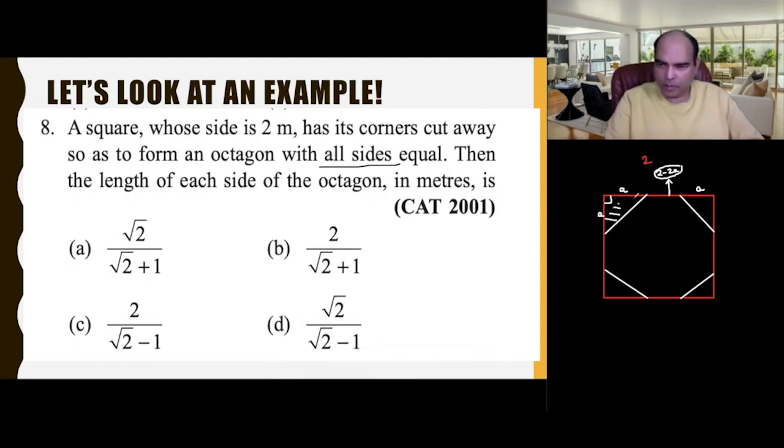You can see that this value is essentially a√2. What's going to happen is 2 minus 2a is equal to - because it's a regular octagon with all sides equal - the side which you see as 2 minus 2a should be equal to the side on this diagonal. So 2 minus 2a equals a√2.